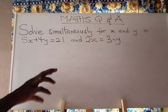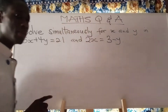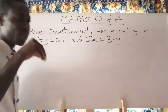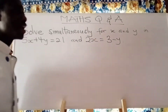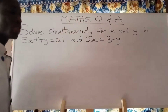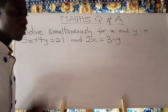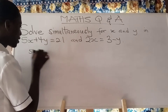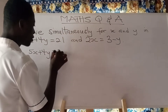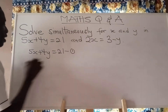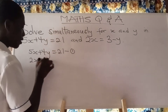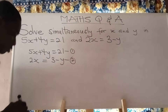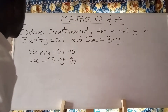We are sticking to the substitution method. What the substitution method says is that you take any variable from any of the equations and make that variable the subject of that given equation. After that, you put the result into the other equation. Taking 5x plus 4y equal to 21 as equation 1, and 2x equal to 3 minus y as equation 2.